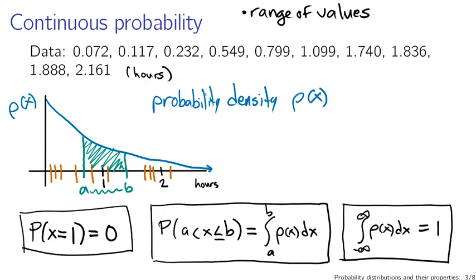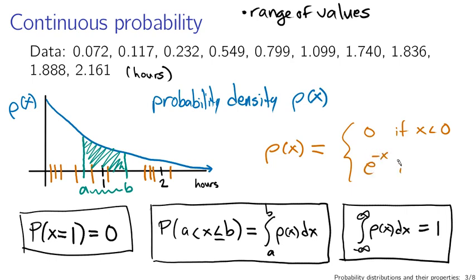In this case, to give you a feel for what these things look like, rho of x is 0 if x is less than 0, and is equal to e to the minus x if x is greater than or equal to 0. This is an example of a probability density function — that's actually the distribution used when these numbers were drawn.